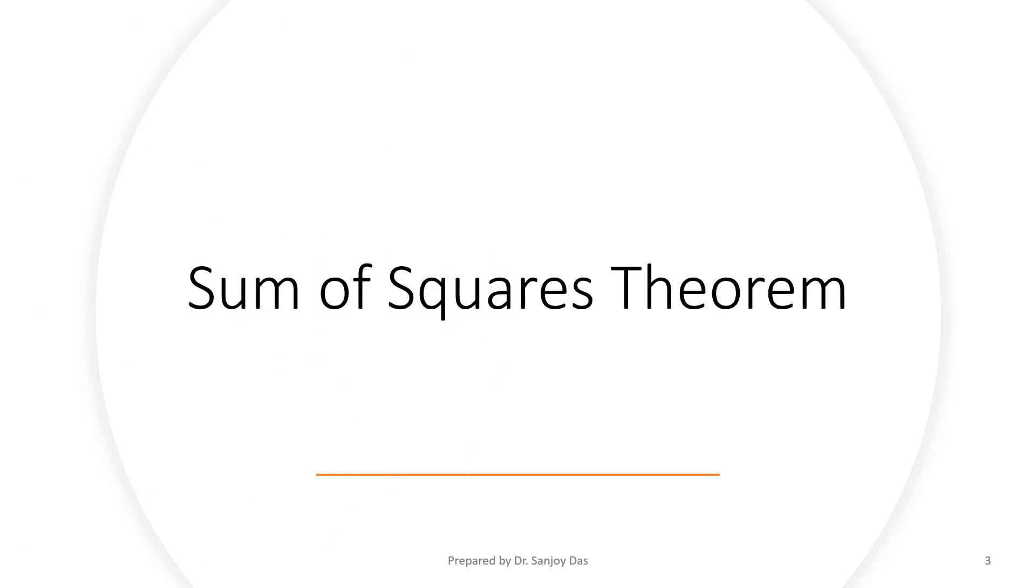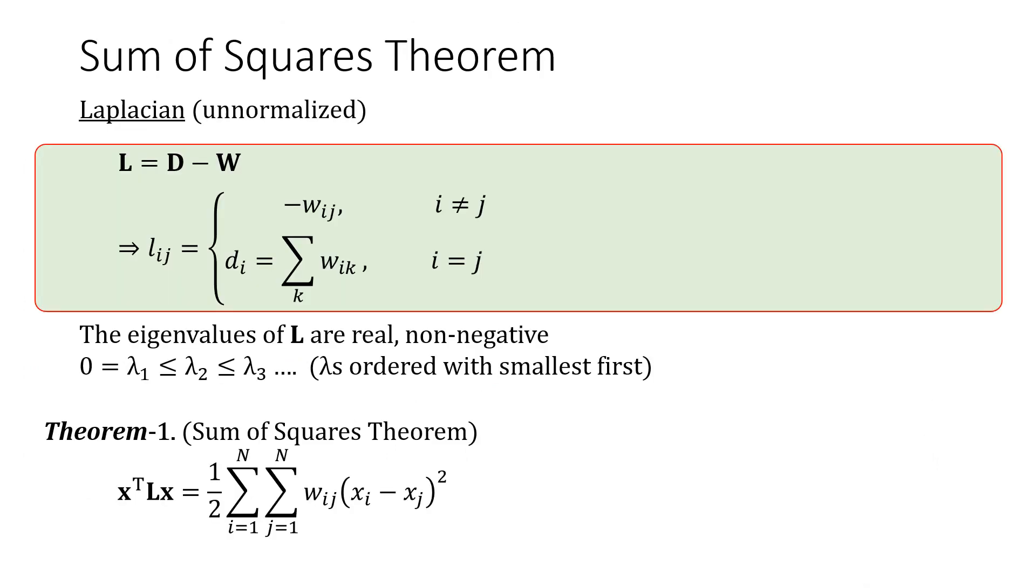Sum of squares theorem. This is the sum of squares theorem. We take a vector x of appropriate size n. Remember, L is an n by n matrix and so x will be an n by 1 vector. And this x transpose Lx, this scalar, is actually equal to this.